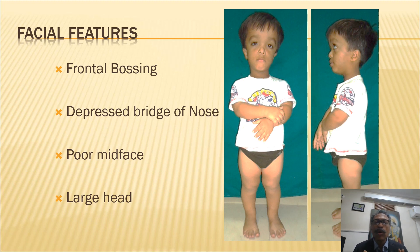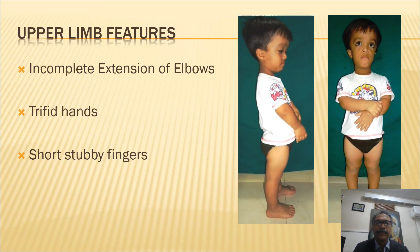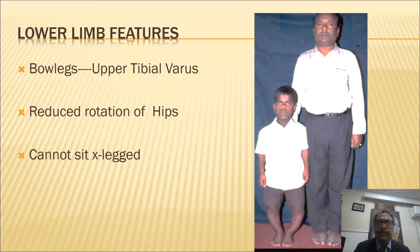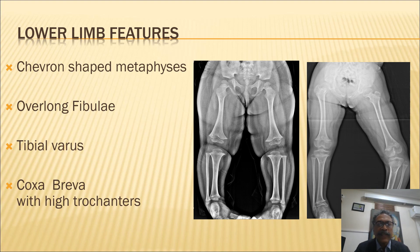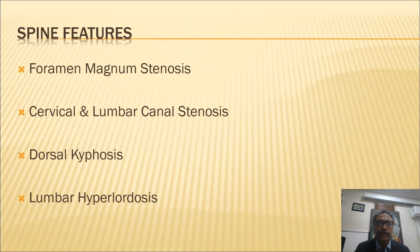There is frontal bossing, a depressed bridge of the nose, poor mid-face formation, and a large head. The upper limbs have incomplete extension of the elbows, trident hands with separation between the third and fourth fingers, and short fingers. In the lower limb there is bow legs with upper tibial varus, and with increasing age the varus increases in the lower tibia as well. There is reduced rotation of the hips and they generally cannot sit cross-legged. On X-rays they have chevron-shaped metaphysis with longer fibulae, tibial varus, and coxa breva with high trochanters.